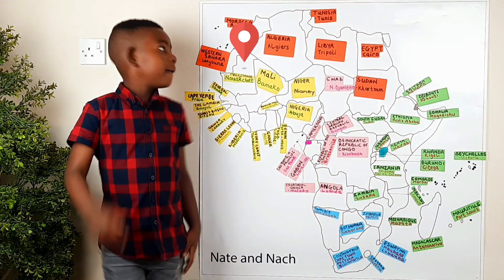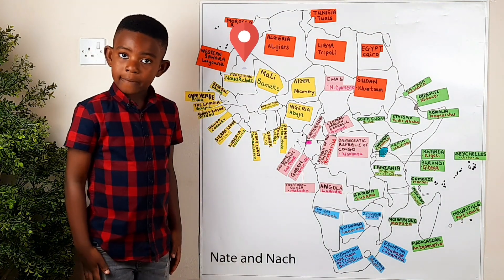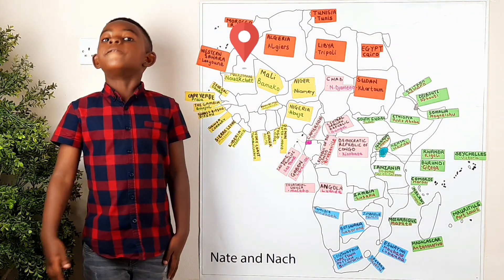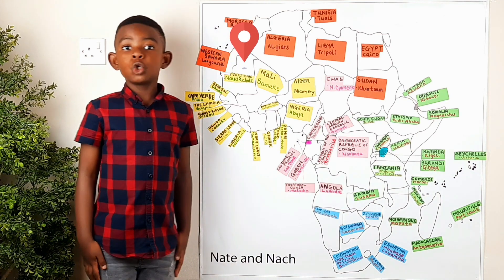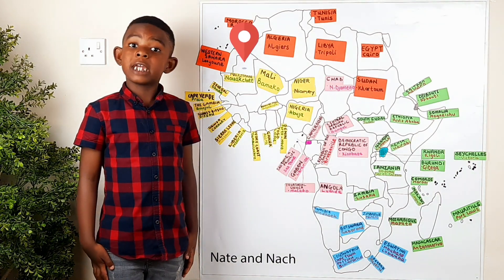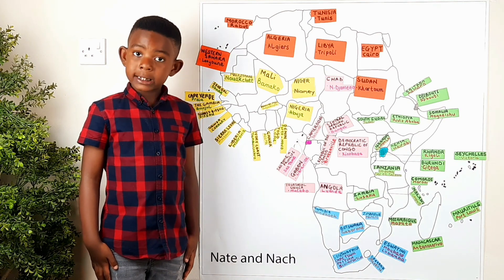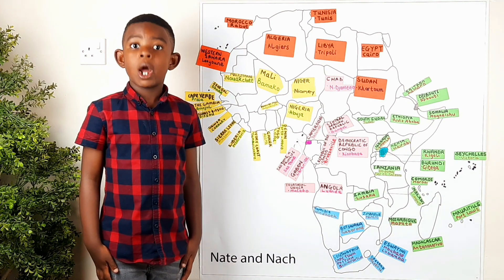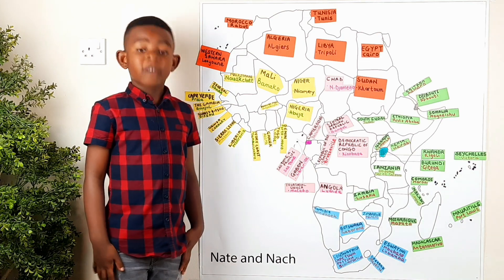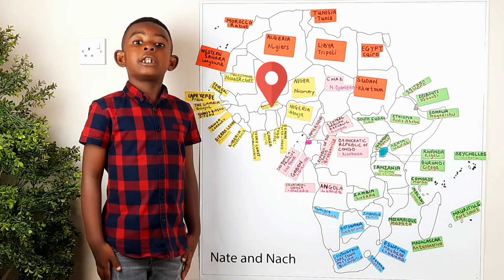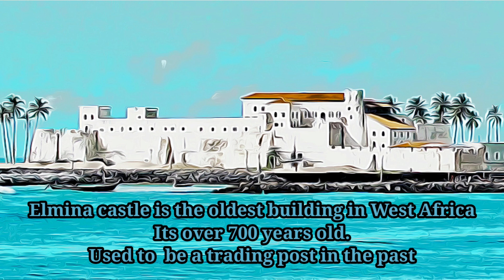Did you know that Mauritania falls in North Africa or sometimes falls in West Africa? I'd probably say Mauritania is found in North West Africa. The oldest castle in West Africa is found in Ghana. It is called Elmina Castle. It is 700 years old, but it's the oldest castle in Western Africa.